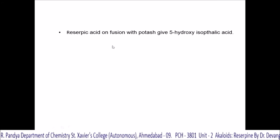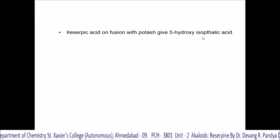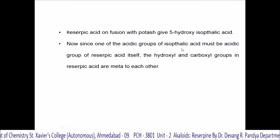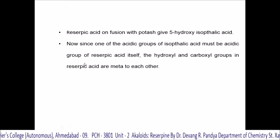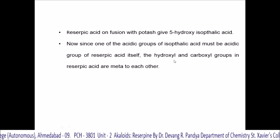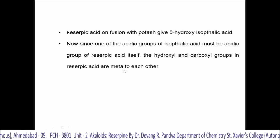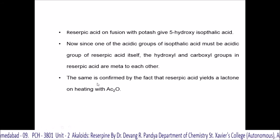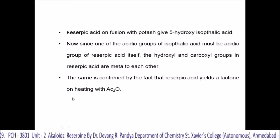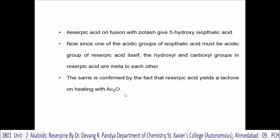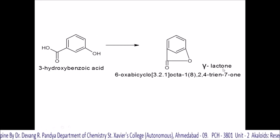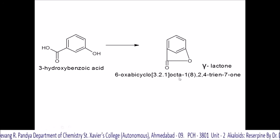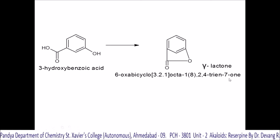Reserpic acid on fusion with potash gives 5-hydroxyisophthalic acid. Since one of the acidic groups of isophthalic acid must be the acidic group of reserpic acid itself, the hydroxyl and carboxylic groups in reserpic acid are meta to each other. This is confirmed by the fact that reserpic acid yields a lactone on heating with acetic anhydride. The hydroxybenzoic acid is converted into a gamma-lactone, i.e., 6-oxabicyclo[3.2.1]octa-1,8,4-trien-7-one.